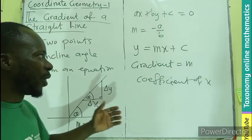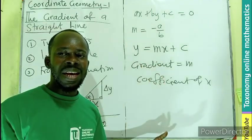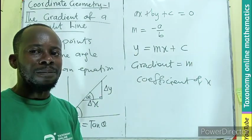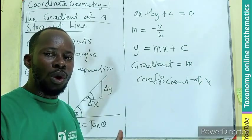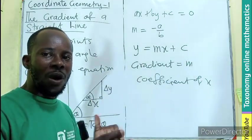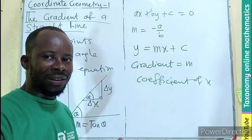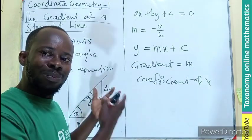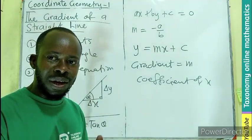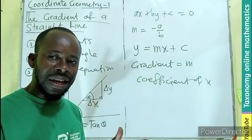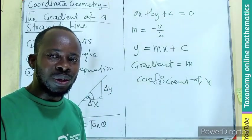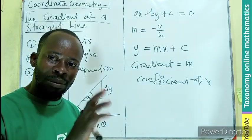These are the three ways by which you can find the gradient of a straight line. In the next episode, we will take various questions to explain the concepts we developed here. Don't forget to share, like, comment, and subscribe. Bye-bye.